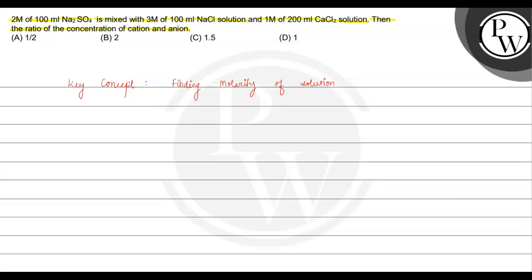The first solution is Na₂SO₄. Na₂SO₄ dissociates into 2 Na⁺ ions and 1 SO₄²⁻ ion. The molarity is 2 molar and the volume is 100 ml. So from 2 molar Na₂SO₄, we get 4 molar Na⁺ ions and 2 molar SO₄²⁻ ions.